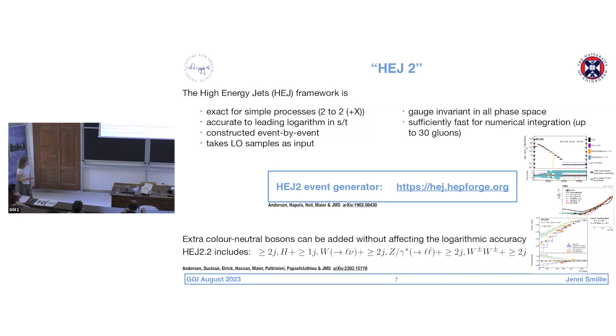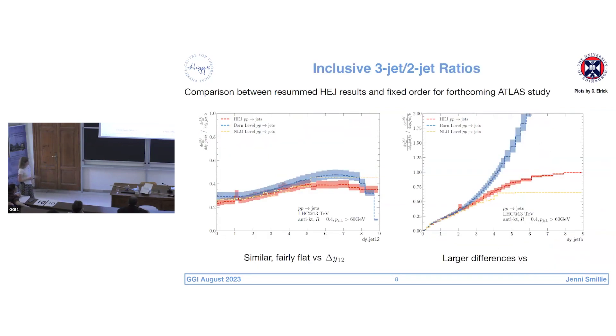So I wanted to decide what the first set of plots I should show were. I've chosen these ones because they're some of the most recent plots that we've actually shown. They'll appear in a forthcoming ATLAS study. Sadly, I can't show the data points with these yet. The preliminary plots do exist, but they're waiting on NNLO predictions to add to them, which are proving quite difficult.